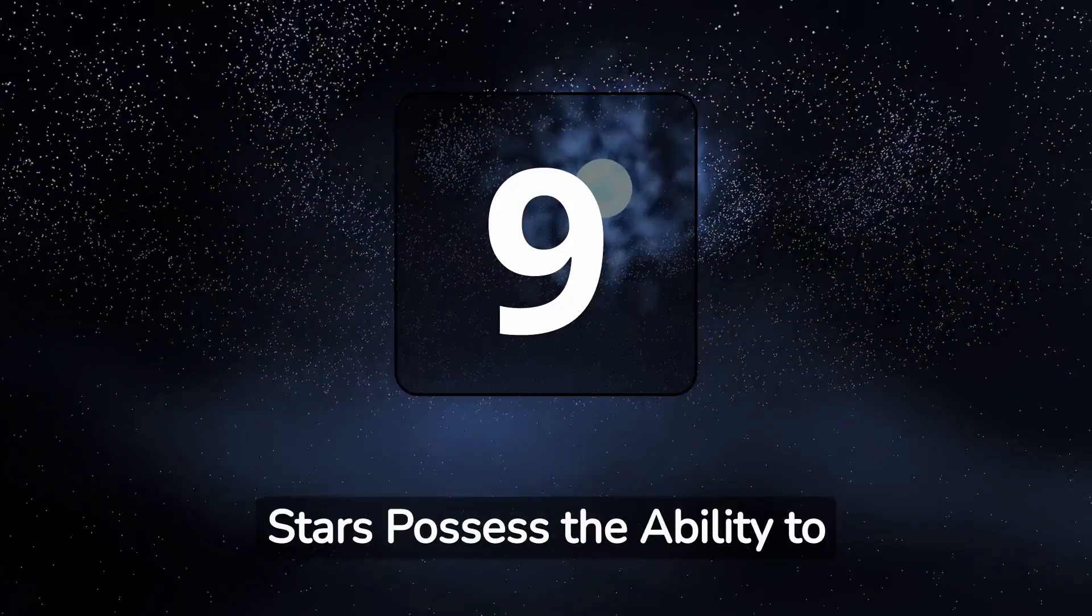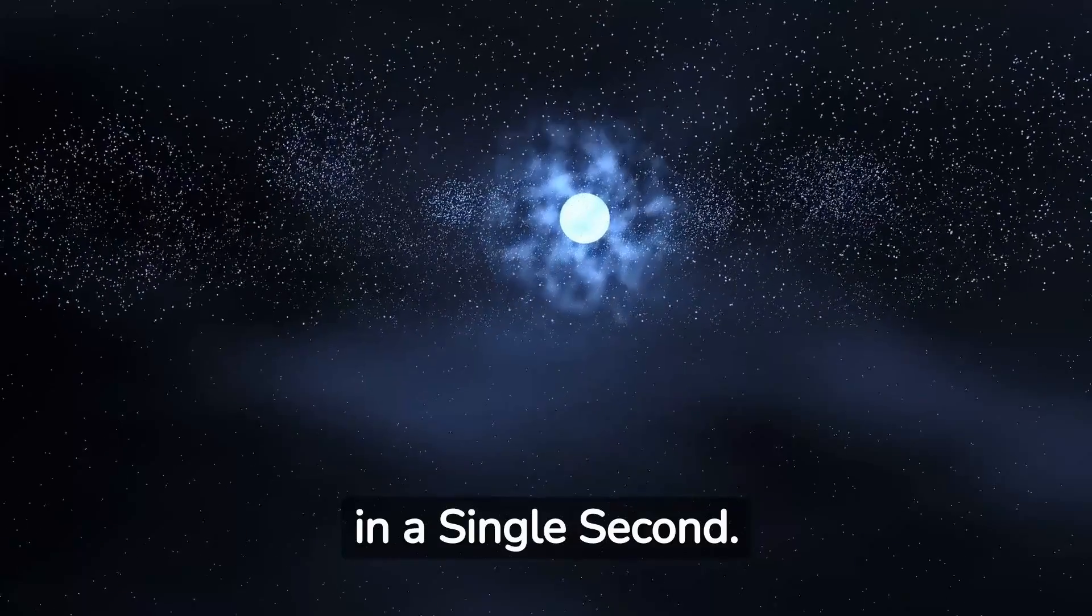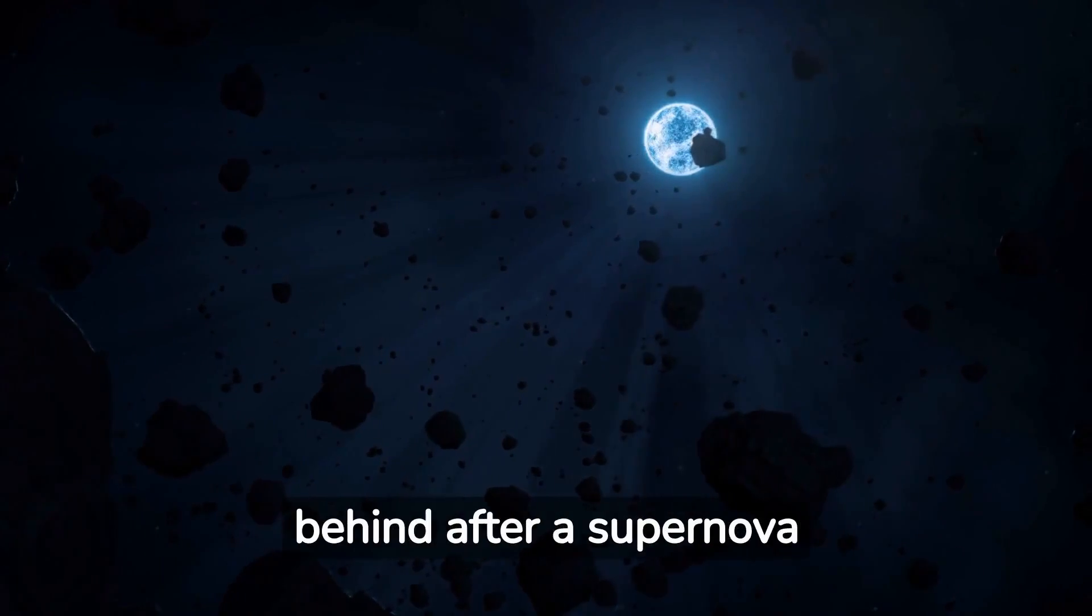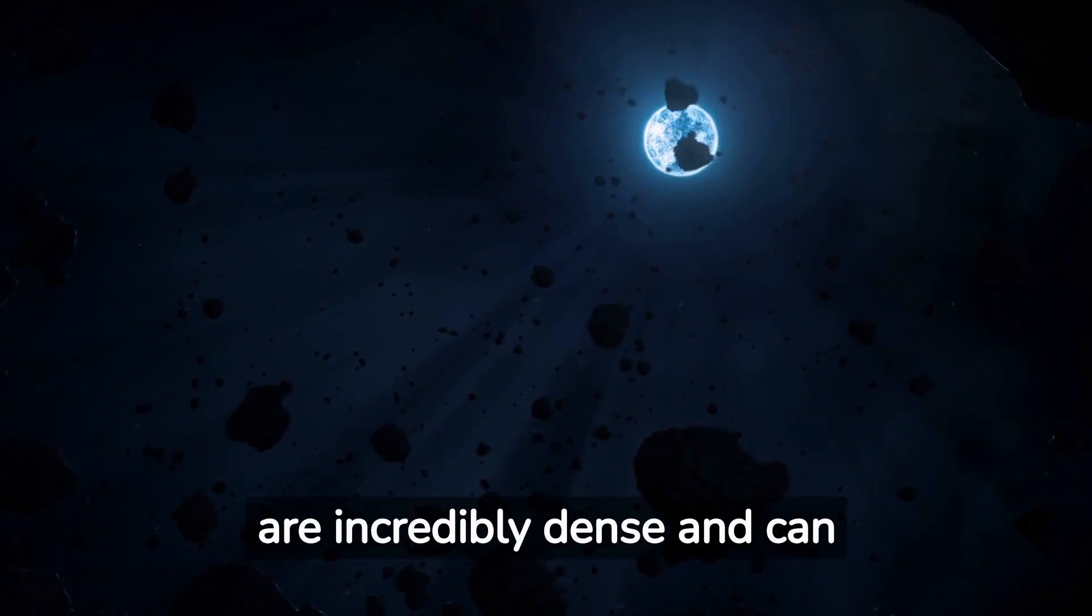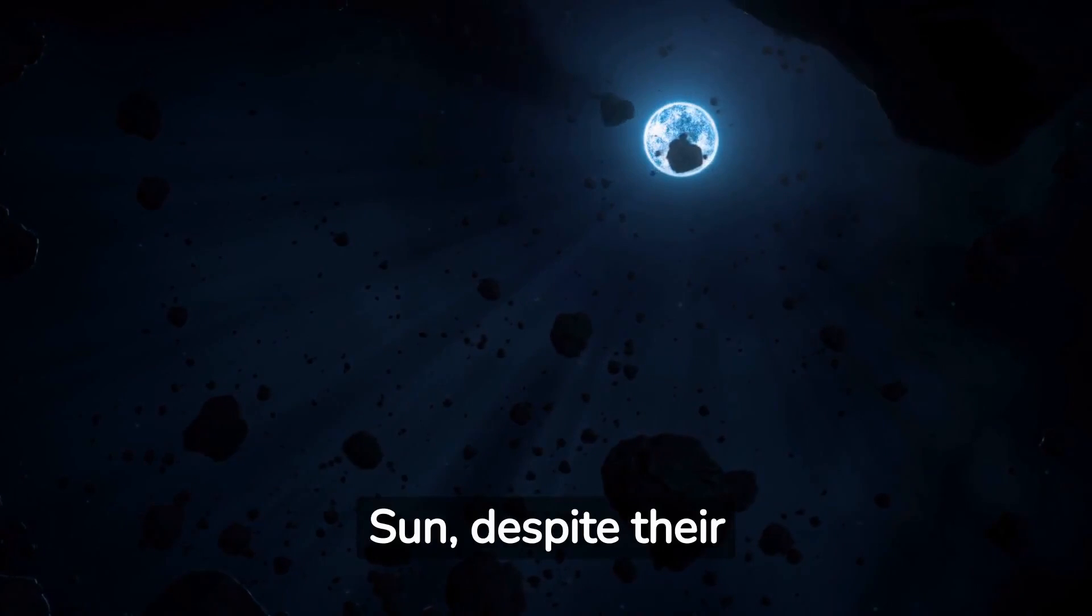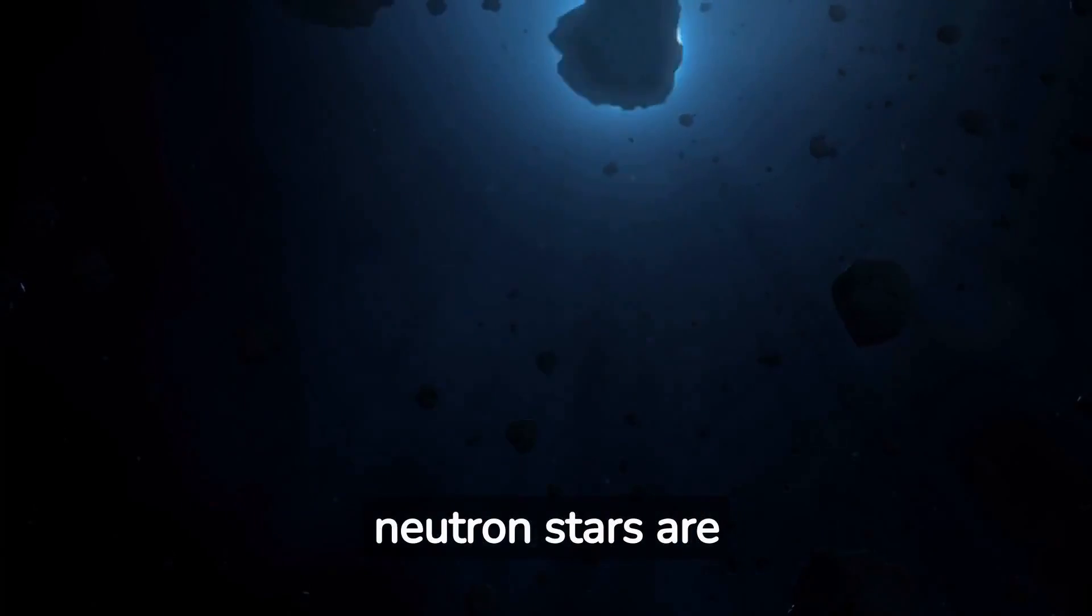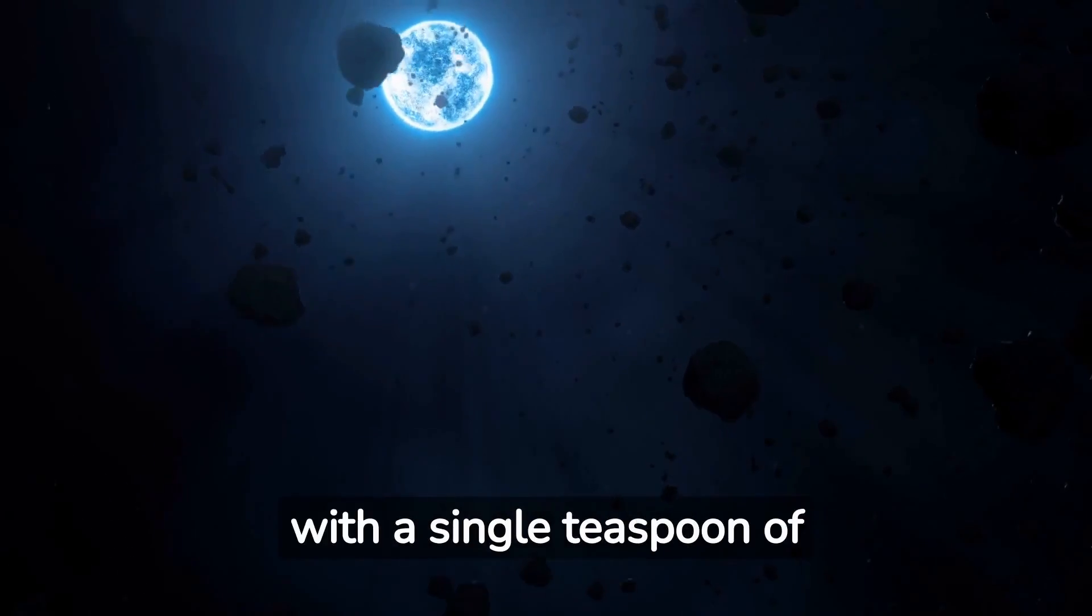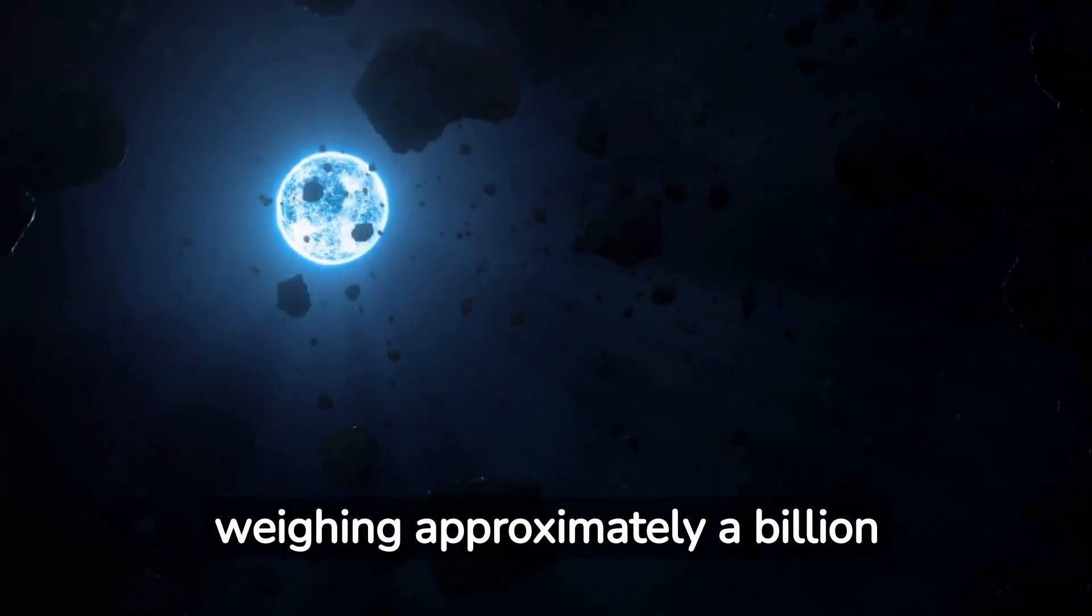Number 9: Neutron stars possess the ability to rotate 600 times in a single second. Neutron stars, which are the remnants left behind after a supernova explosion of a massive star, are incredibly dense and can have a mass up to twice that of the Sun, despite their relatively small size. Neutron stars are among the universe's most extreme entities, with a single teaspoon of neutron star substance weighing approximately a billion tons.